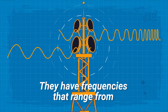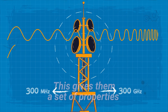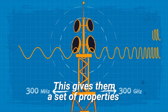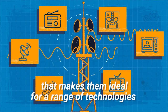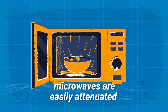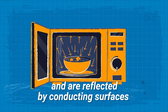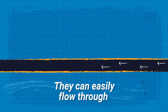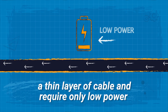Microwaves have frequencies that range from 300 megahertz to 300 gigahertz. This gives them a set of properties that makes them ideal for a range of technologies. Aside from their use in heating food, microwaves are easily attenuated within shorter distances, travel in a straight line, and are reflected by conducting surfaces. They can easily flow through a thin layer of cable and require only low power.